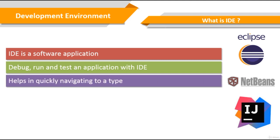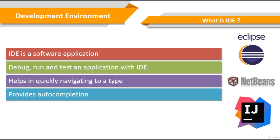IDE helps us in quickly navigating to a particular type without needing to worry about our projects. It also provides auto-completion — that means whenever you type part of a function or class name and then press a shortcut combination, the rest of the name is automatically typed for you. All these features are a great reason for you to prefer an IDE.